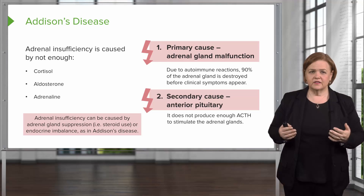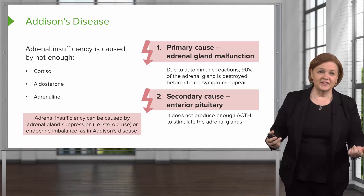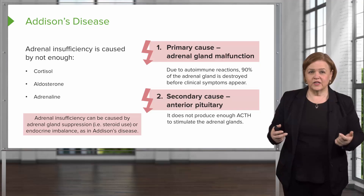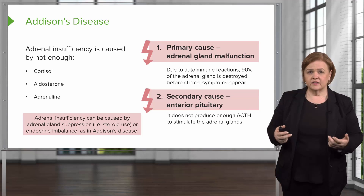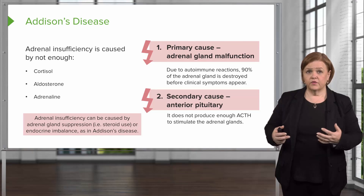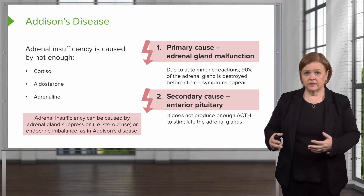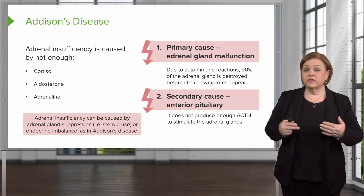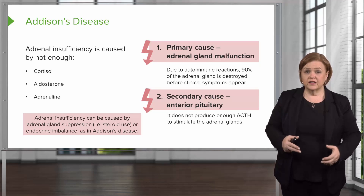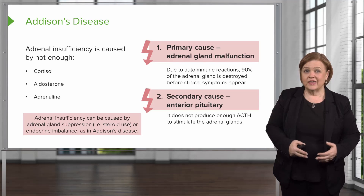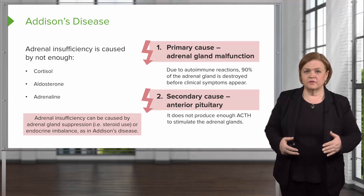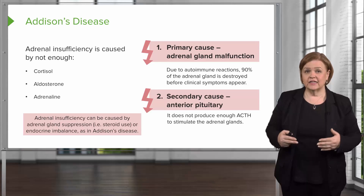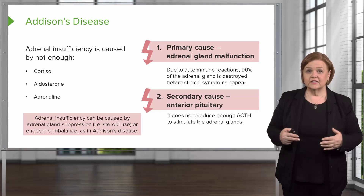The reason we're talking about this is because of Addisonian crisis — what happens when someone with Addison's disease doesn't have enough hormones to respond to stress. It also happens when someone who's had Cushing's syndrome received lots of corticosteroids, their adrenal gland became suppressed, and now it can't respond because that patient stopped taking the medications. That's why we're looking at Addison's disease and Cushing's together.